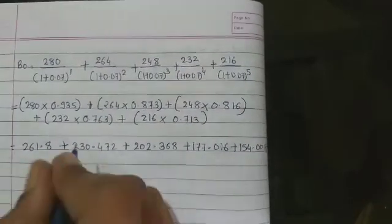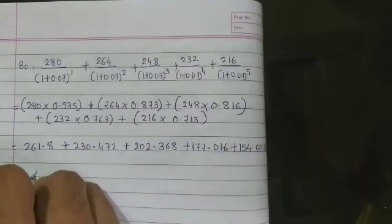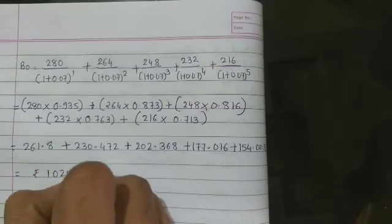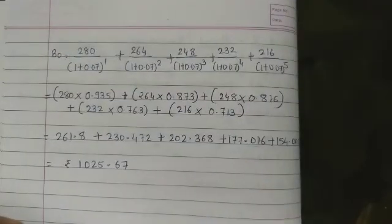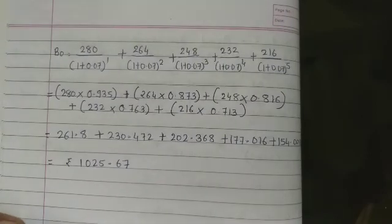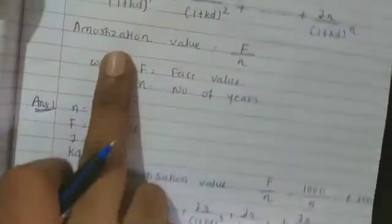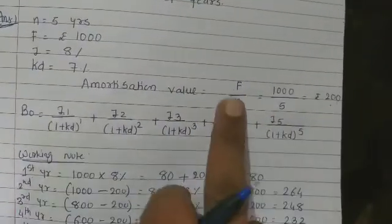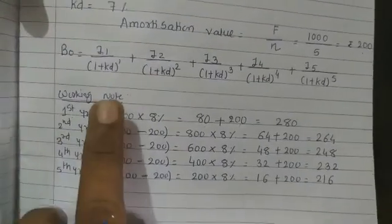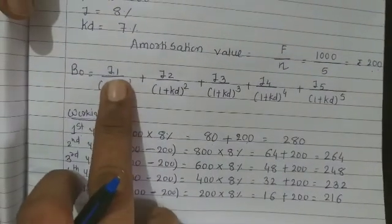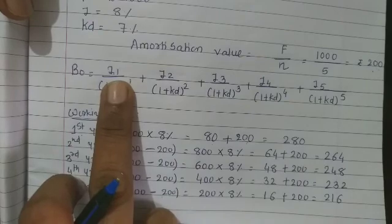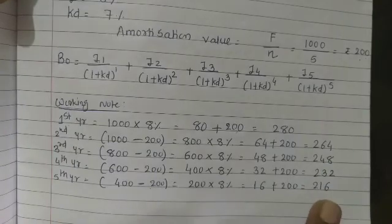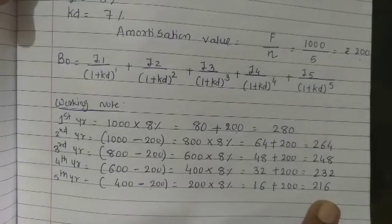Adding all values: total present value = rupees 1025.67. To summarize: if 'amortize' is mentioned in the problem, it is a bond amortization sum. If the amortization value is not given, use face value divided by N. Then find each year's interest plus principal, and discount each year individually using the present value factor — not the annuity factor — because the cash flow changes every year.